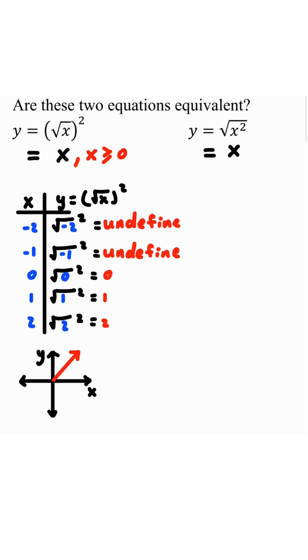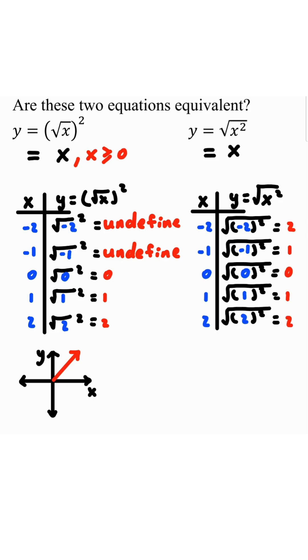But what about the one on the right? We'll make a table of values. We simplify it. Notice that they all have values. Square root of negative 2 quantity squared is square root of 4, which is 2. Square root of negative 1 quantity squared is square root of 1, which is 1. Square root of 0 quantity squared is just square root of 0 or 0. Square root of 1 squared is square root of 1, which is 1. Square root of 2 squared is square root of 4, which is 2.